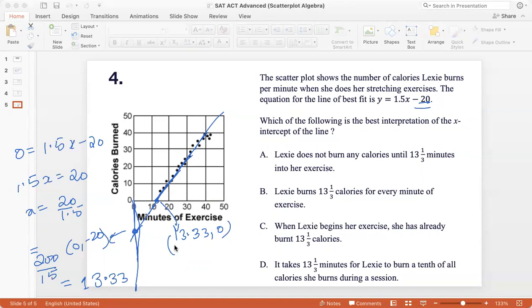Now, what does this mean? This means that Lexi starts exercising and then until 13.33 minutes, she hasn't burned any calories, because that's like the warmer phase of the exercise. And only after that, only after 13.33 minutes does she start burning calories. So for example, at 20 minutes, she has burned 10 calories. At 30 minutes, she has burned about 24 calories and so on. So the best interpretation of this would be that Lexi will not burn any calories until 13.33 minutes into her exercise, which is what option A is saying. Lexi does not burn any calories until 13.33 minutes into her exercise.